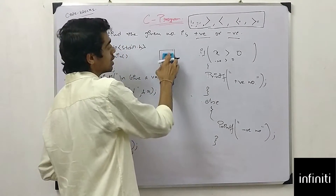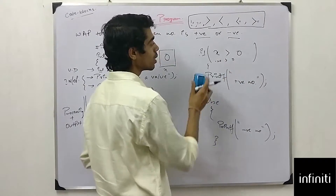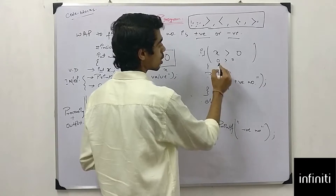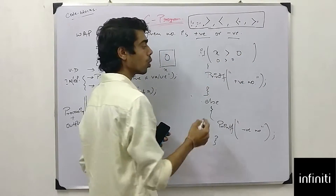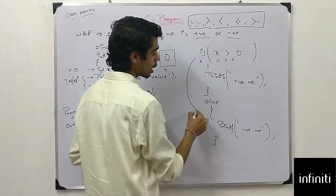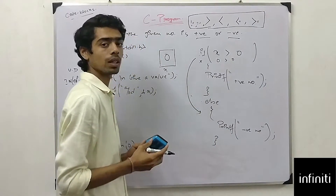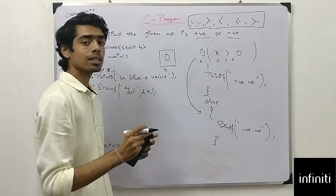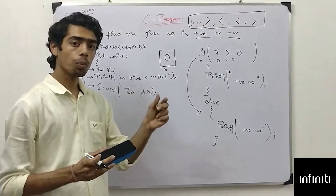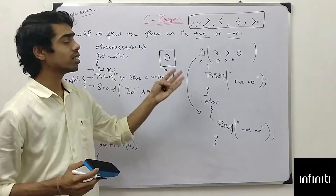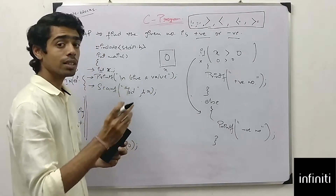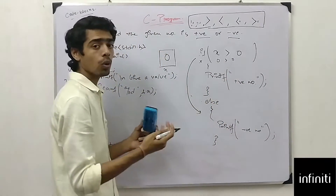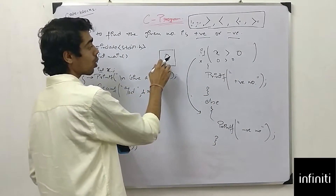Let us take another example: if x is 0. Is 0 greater than 0? No, it is not. So it will again print 'negative number'. Our program will not handle 0 correctly — 0 is a loophole for this program. So I need to modify the code so that it also reacts correctly to 0.